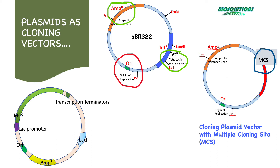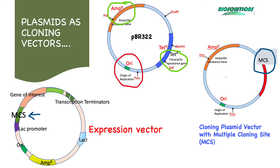Besides that, there are blue-white colony selection features, features for isolating single-stranded DNA, and some expression vectors also have bacteriophage promoters. These features help in selection of transformed versus non-transformed clones — for example, in blue-white colony selection, the LACZ gene and LACI gene are inserted. Bacteriophage promoters like T3 and T7 are found in expression vectors, next to the MCS, which help in directed RNA synthesis followed by translation through bacterial ribosomes. A gene of interest can be cloned in the MCS within the LACZ gene fragment, which enables blue-white colony selection.